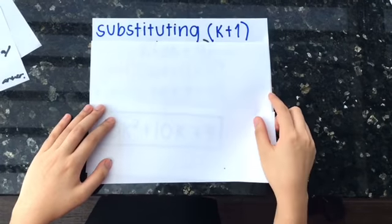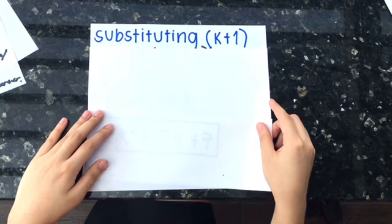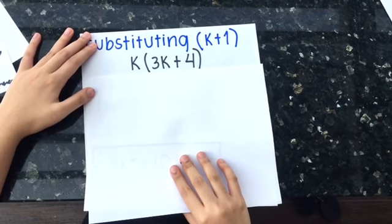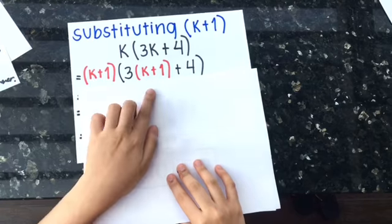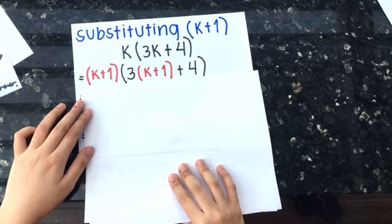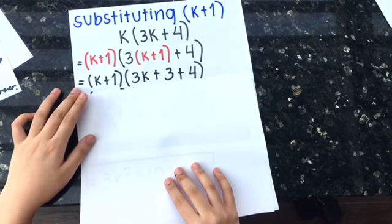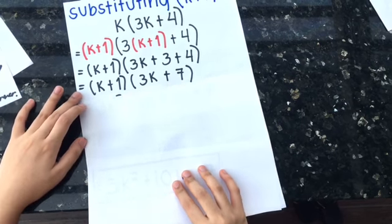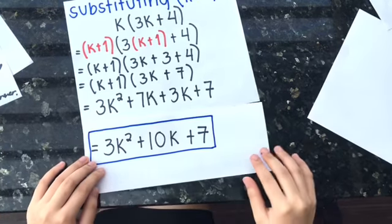Proceeding to the second step, we need to substitute k plus 1. We need to substitute all variables to k plus 1. And then, we will perform the indicated operation that will result to a binomial. And after that, we will do the FOIL so that we can get the final answer.